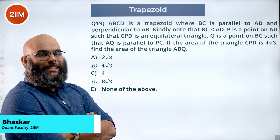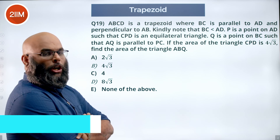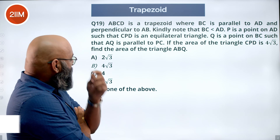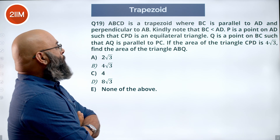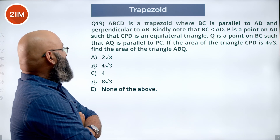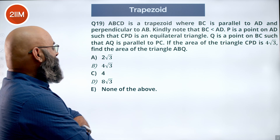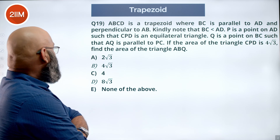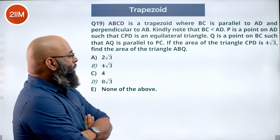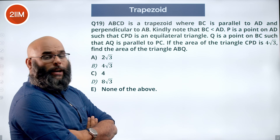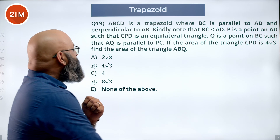ABCD is a trapezoid where BC is parallel to AD and perpendicular to AB, with BC less than AD. P is a point on AD such that CPD is an equilateral triangle. Q is a point on BC such that AQ is parallel to PC. The area of triangle CPD is 4√3. Find the area of triangle ABQ.